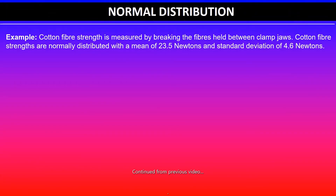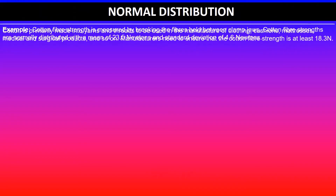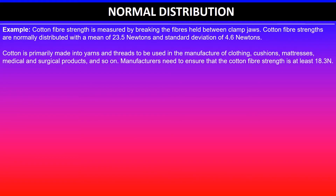In this example, codon fiber strength is measured by breaking the fibers held between the clamp jaws. Codon strengths are normally distributed with a mean of 23.5 Newtons and a standard deviation of 4.6 Newtons. Manufacturers need to ensure that the codon fiber strength is at least 18.3 Newtons.